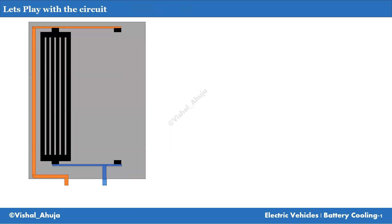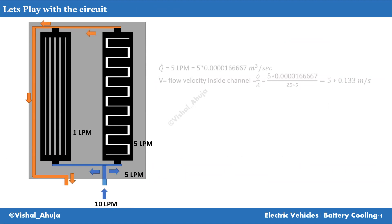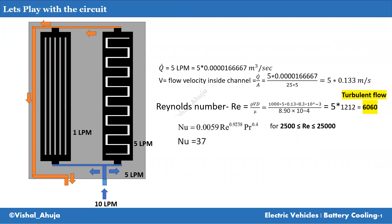We know the major resistance is coming from the flow side. Let's play with the circuit a bit. Instead of five channels, let's make a single channel, so all five LPM flows through a single channel. The velocity in that section will increase. We calculate the Reynolds number again, and now it is five times higher — 6060. This is no longer laminar flow, so the Nusselt number will not be a constant value; it will depend on velocity. Using the turbulent flow equation and considering water as a coolant, we get a Nusselt number of 37.